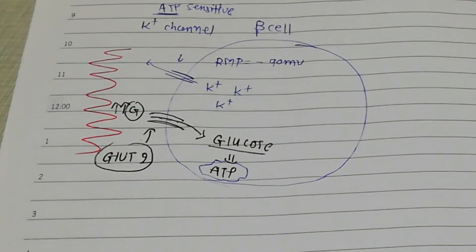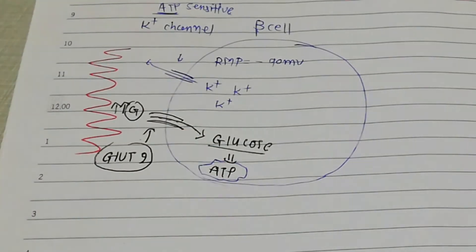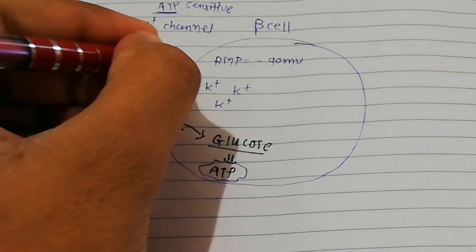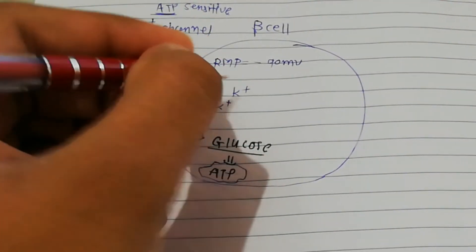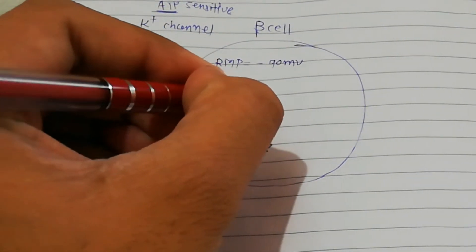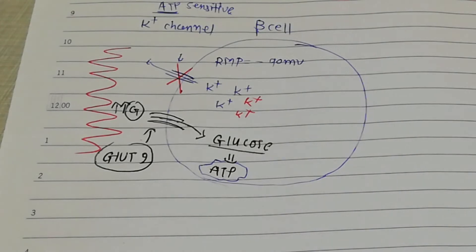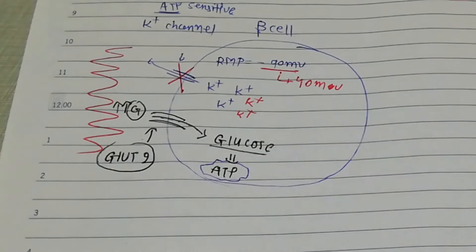These channels are the ATP-sensitive K+ channels. ATP leads to the closure of those K+ channels, so K+ does not go outside the cell. K+ accumulates inside the cell, which depolarizes the cell — the resting membrane potential rises from minus 90 to minus 40 millivolts.